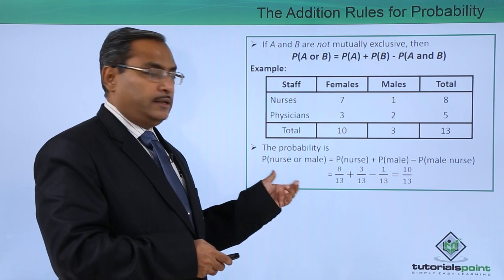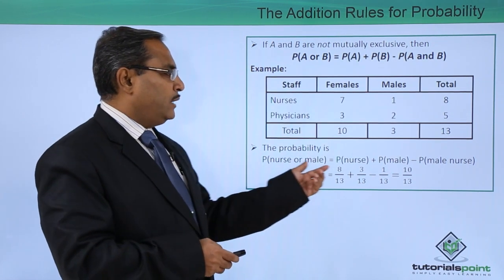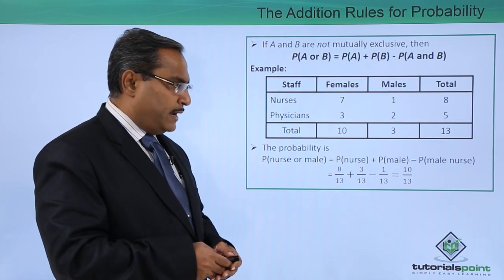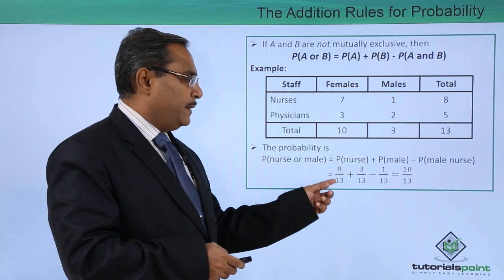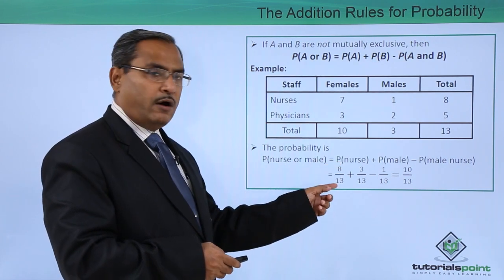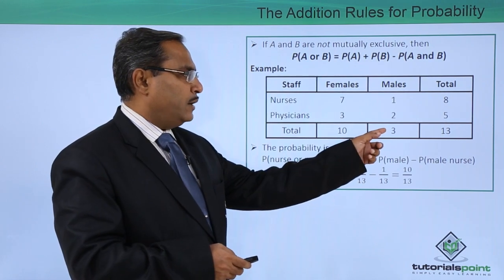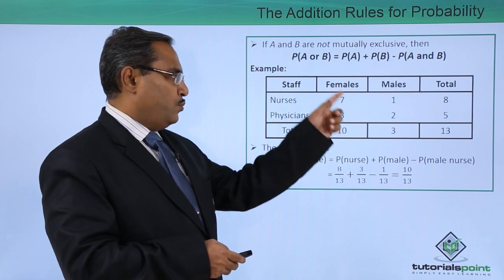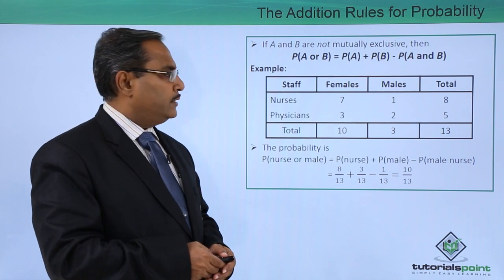We have some nurses who are also male, so these events are not mutually exclusive — there is some overlap. In that case, probability of nurse or male equals probability of nurse plus probability of male minus probability of male nurse. That is eight by thirteen plus three by thirteen minus one by thirteen — since there is only one male nurse. So the probability will be ten by thirteen.